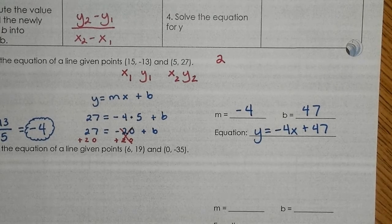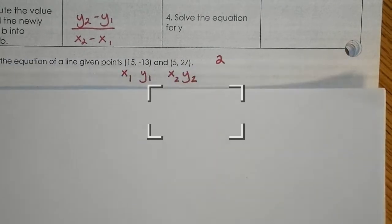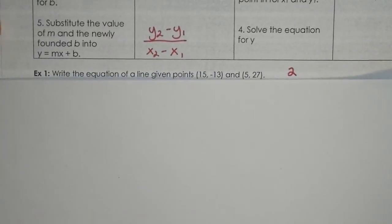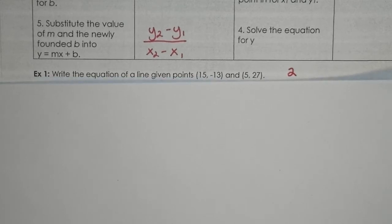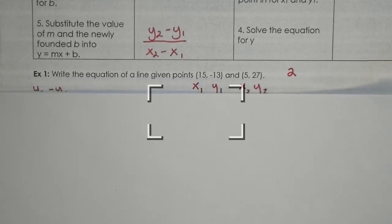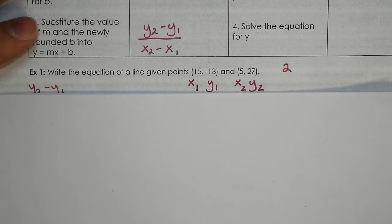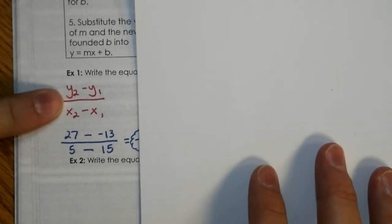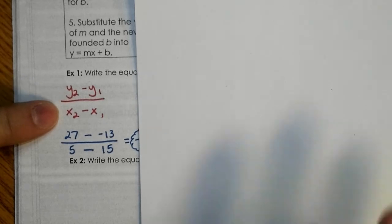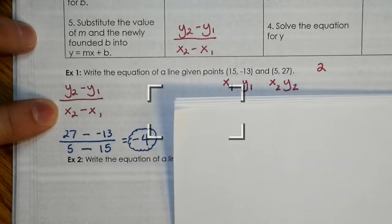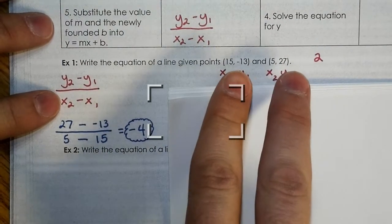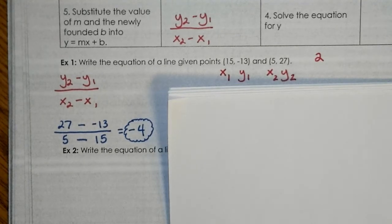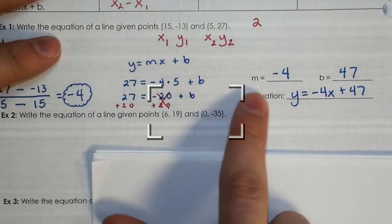So, before we move on, let's recap. Write an equation of a line given the points (15, -13) and (5, 27). So, first we need to label our X1, our Y1, our X2, and our Y2, which we did. We used that information to plug it into our slope formula. Y2 minus Y1 over X2 minus X1. We were able to plug all that information in based on just looking at the points. We just looked at points, and we plugged it into the formula, and we got negative 4. So, we knew that negative 4 is our slope, or that is our M. So, we went ahead and put our slope down as negative 4.